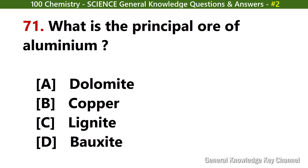What is the principal ore of aluminium? Answer D: Bauxite.